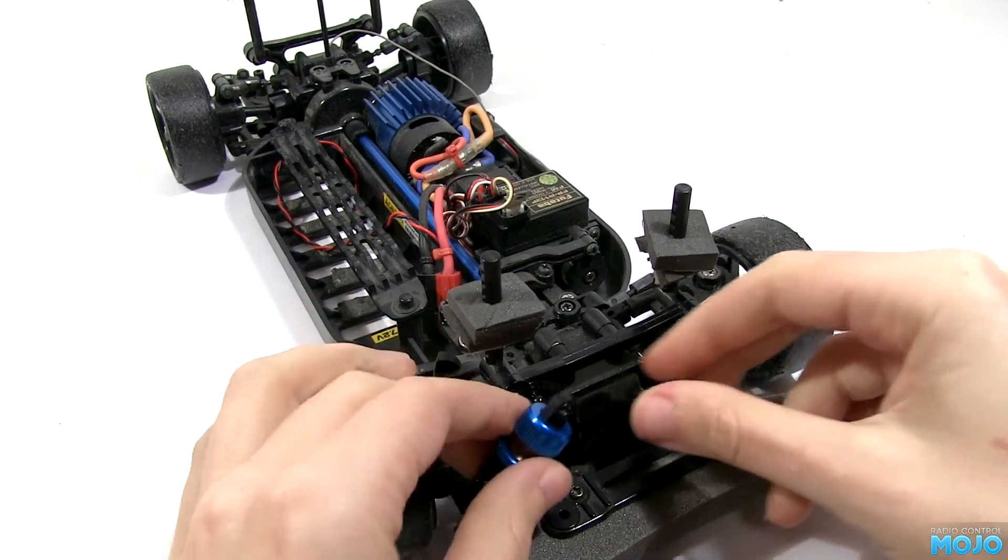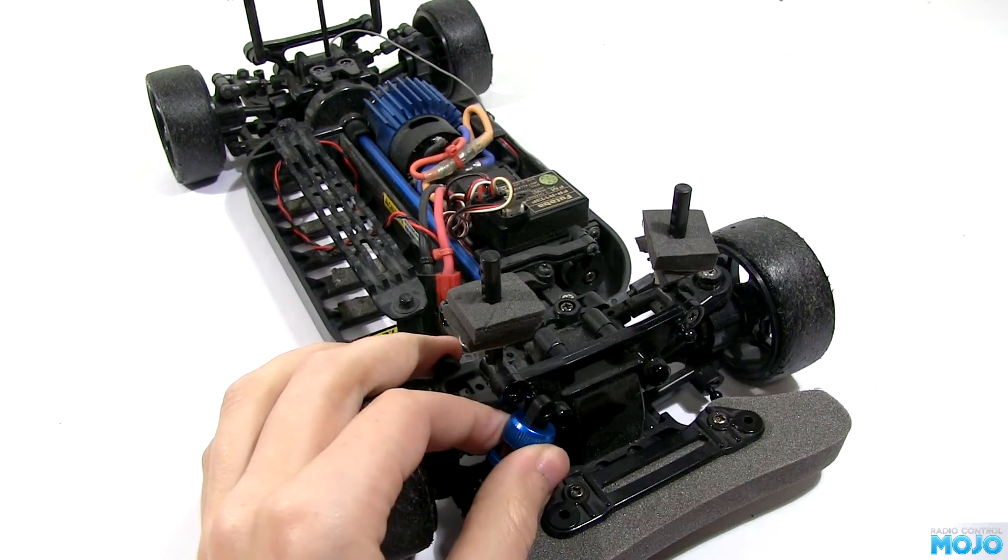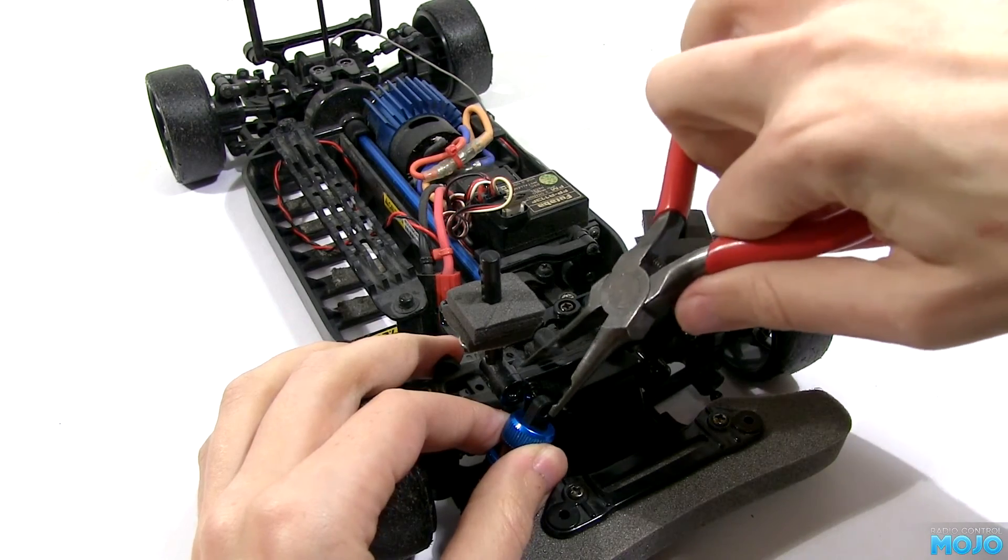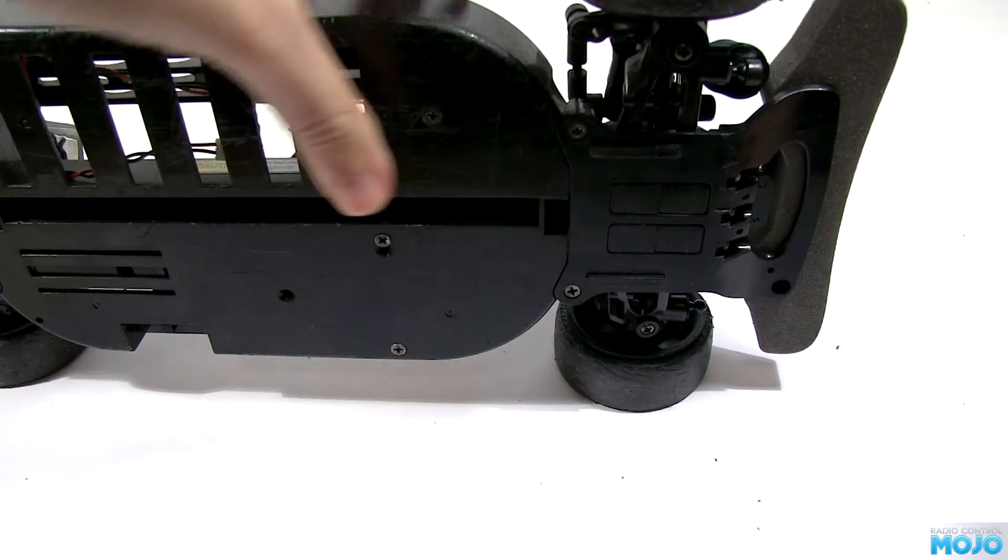Pop the new dampers over the ball ends. You might need some pliers for the top balls as the plastic is fairly stiff. The lower ones are easy enough to do by hand.